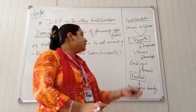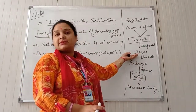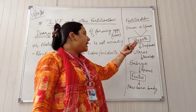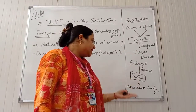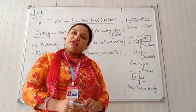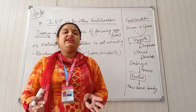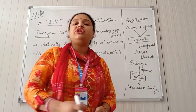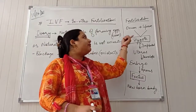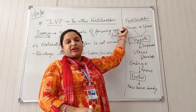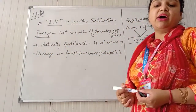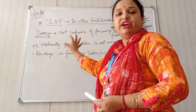Then the zygote is implanted and injected inside the vaginal tract of the female, and the uterus allows it to get attached to its walls. From there, the process continues as the normal process of development of an embryo and fetus. So this artificial process of fusing eggs and sperm outside the body and implanting the resulting zygote is known as in vitro fertilization.